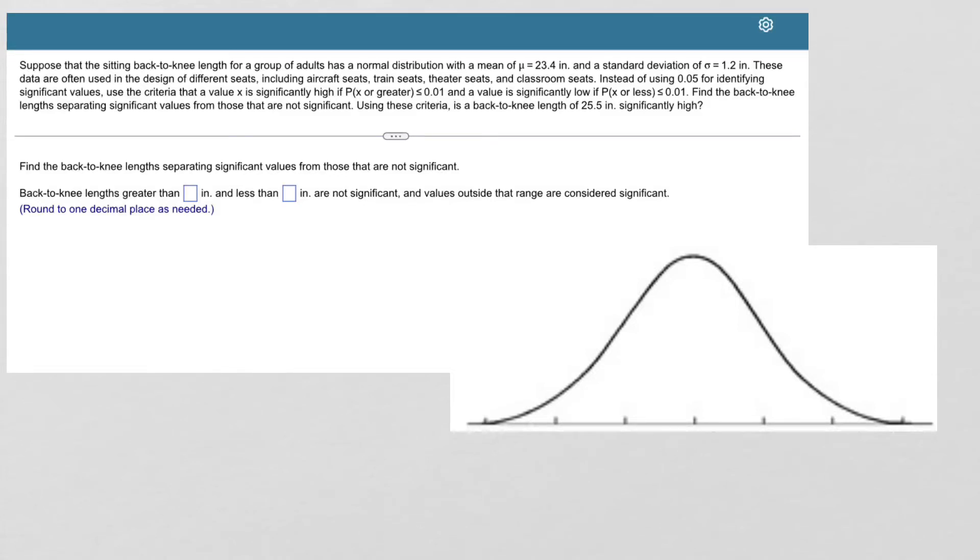In this problem, we're told that the sitting back-to-knee length for a group of adults has a normal distribution with a mean of 23.4 inches and a standard deviation of 1.2 inches.